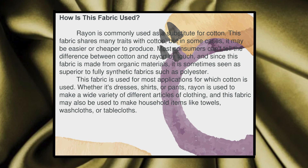How is this fabric used? Rayon is commonly used as a substitute for cotton. This fabric shares many traits with cotton, but in some cases it may be easier or cheaper to produce. Most consumers can't tell the difference between cotton and rayon by touch, and since this fabric is made from organic materials, it is sometimes seen as superior to fully synthetic fabrics such as polyester. Rayon is used for dresses, shirts, pants, and a wide variety of clothing articles, and it may also be used for household items like towels, washcloths, and tablecloths.